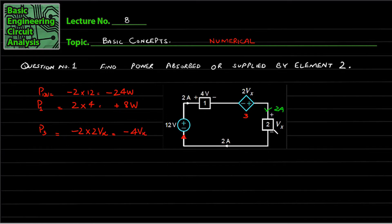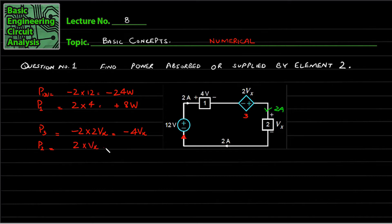I am left with only one component — this is component number two. The current is entering on the positive side and the voltage across this component is VX. So 2 ampere — this is positive current — into VX. This will be 2VX, and this is positive.